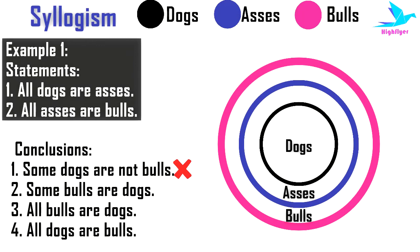Second conclusion: Some bulls are dogs. As we can see, dogs come under as a subset to the bigger set bulls, so this statement is correct — from all the bulls, some bulls are dogs. Next, conclusion 3: All bulls are dogs. Bulls is a much bigger circle than dogs, so all bulls cannot be dogs — statement 3 is incorrect. Statement 4: All dogs are bulls — this is true because dogs comes as a subset to the bigger circle bulls. So conclusions 2 and 4 logically follow.